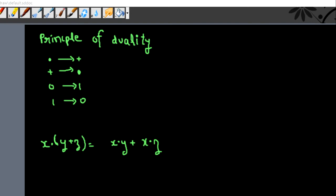It states that from one Boolean expression you can derive another Boolean expression by changing multiplication to addition, addition to multiplication, 0 to 1, and 1 to 0.